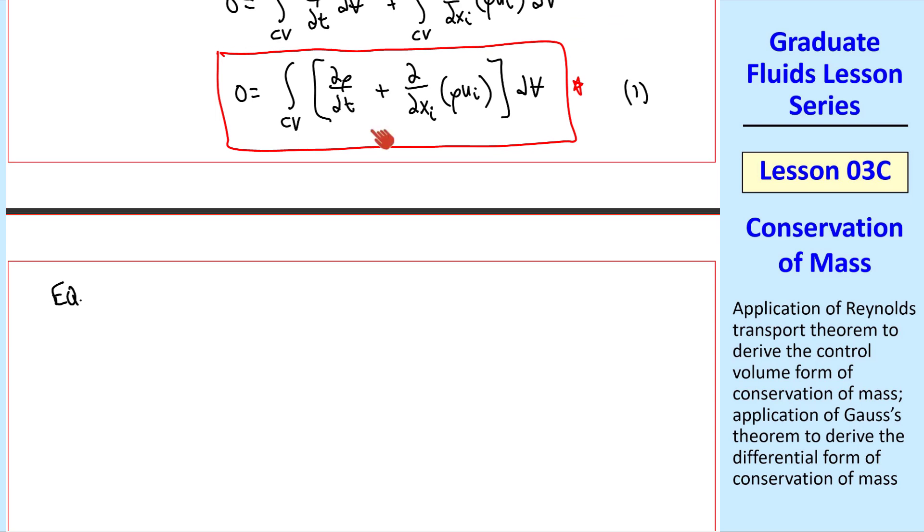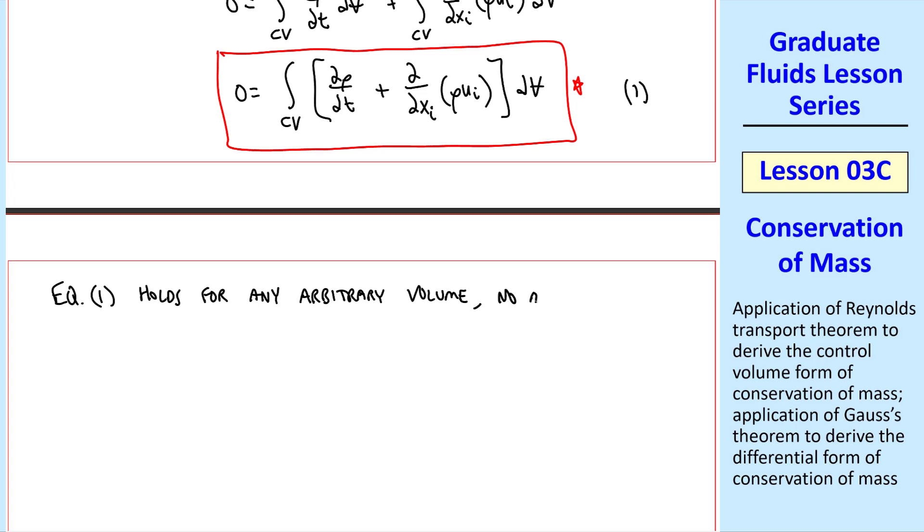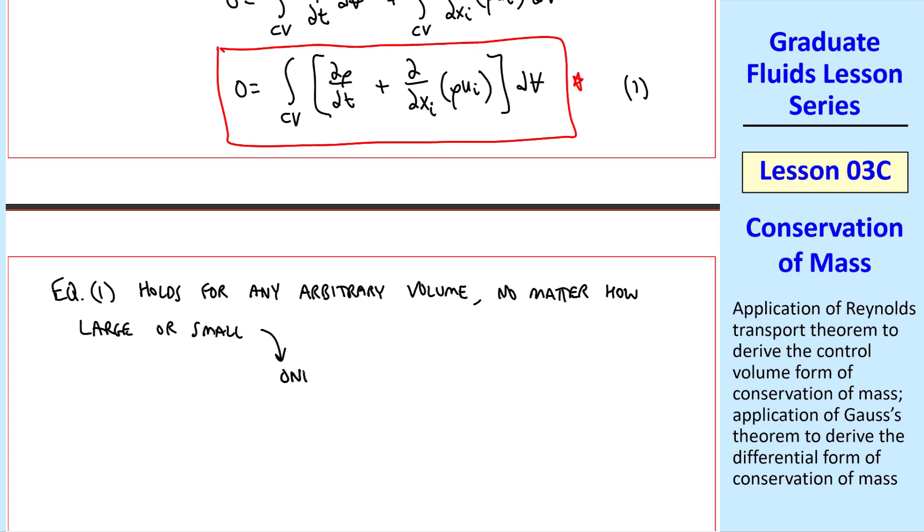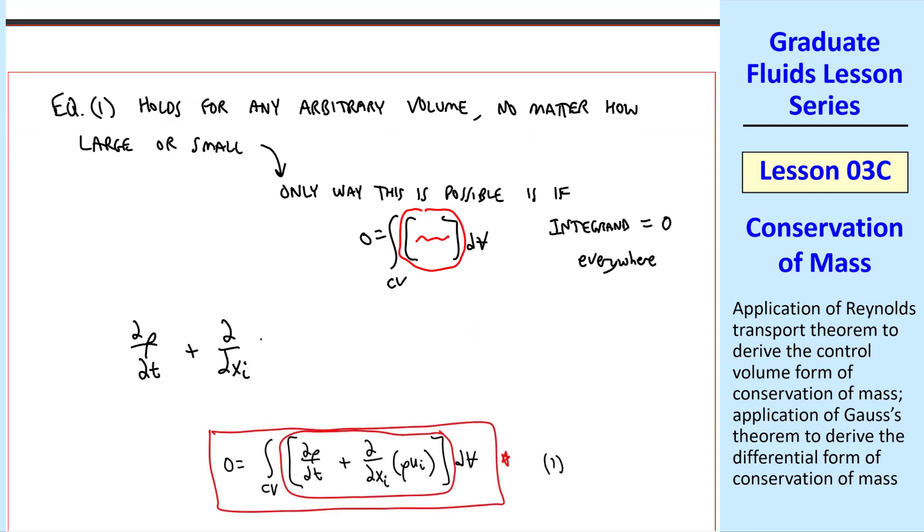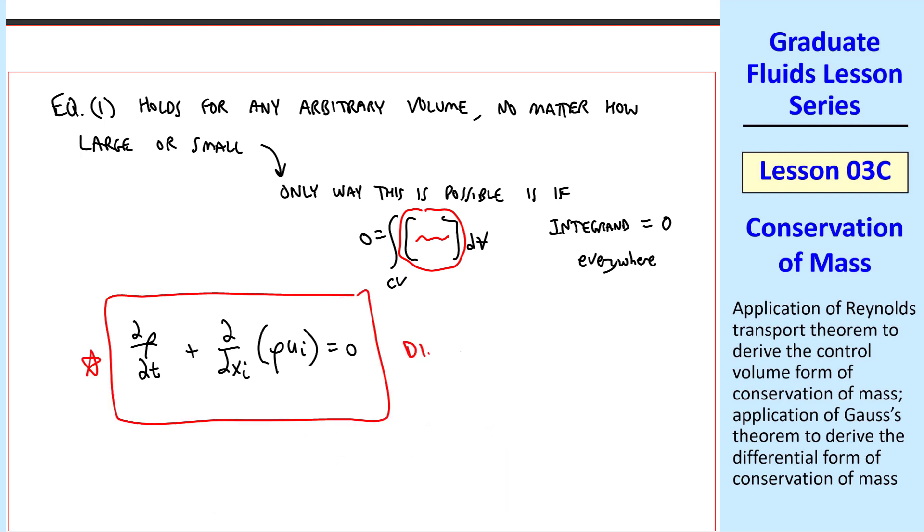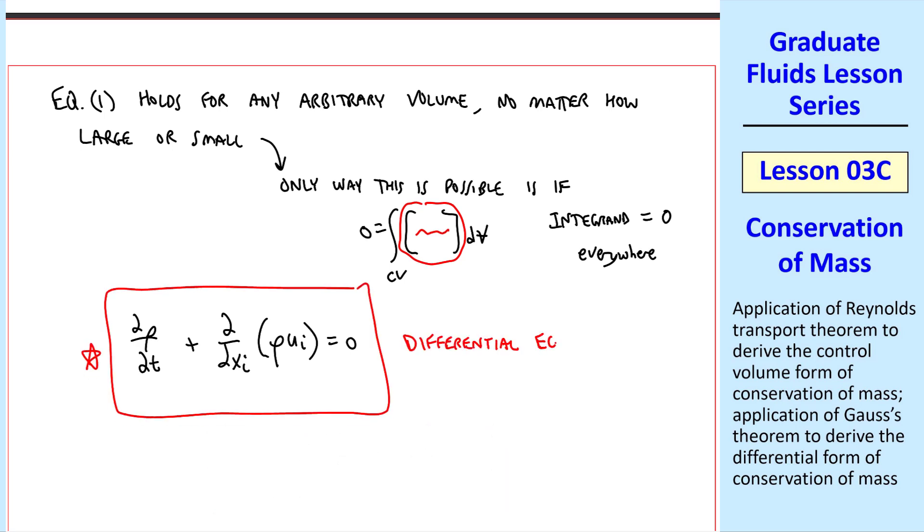Now let's argue that this equation, which I'll call 1, holds for any arbitrary volume, no matter how large or small. The only way this is possible is if the integrand in this equation, which is everything circled up here, is 0 itself, everywhere in the flow. So we set everything encircled in red to 0, and write out, thus, del rho del t, plus del del xi of rho ui equals 0. And thus, in a few simple steps, we have the differential equation of conservation of mass, which most people just call the continuity equation.